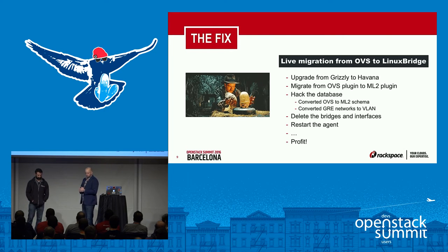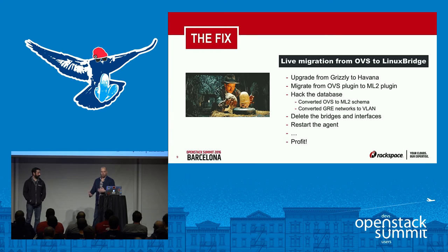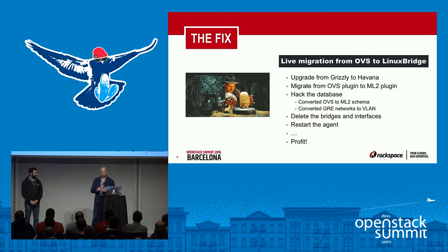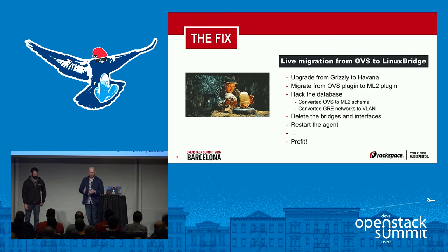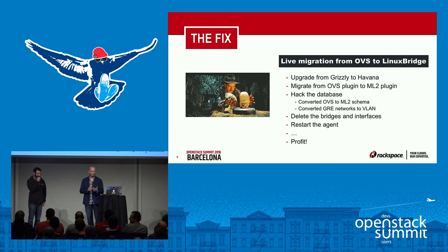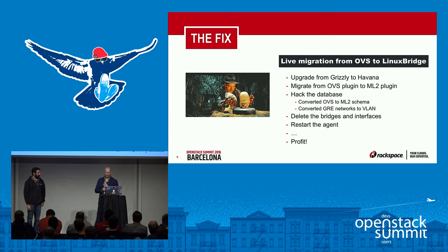A couple of things prohibited us from upgrading OVS: kernel incompatibilities with new versions, DKMS to compile kernel modules, and a reluctance to believe the new version would solve all problems. At the time there was a lot of transition from the core plugin technology to ML2. With ML2 you had OVS or Linux bridge, and what ML2 provided was the ability to leverage the same database schema and change the core plugin behind it. For a customer having problems with Open vSwitch, we decided to first upgrade from Grizzly to Havana to leverage ML2.